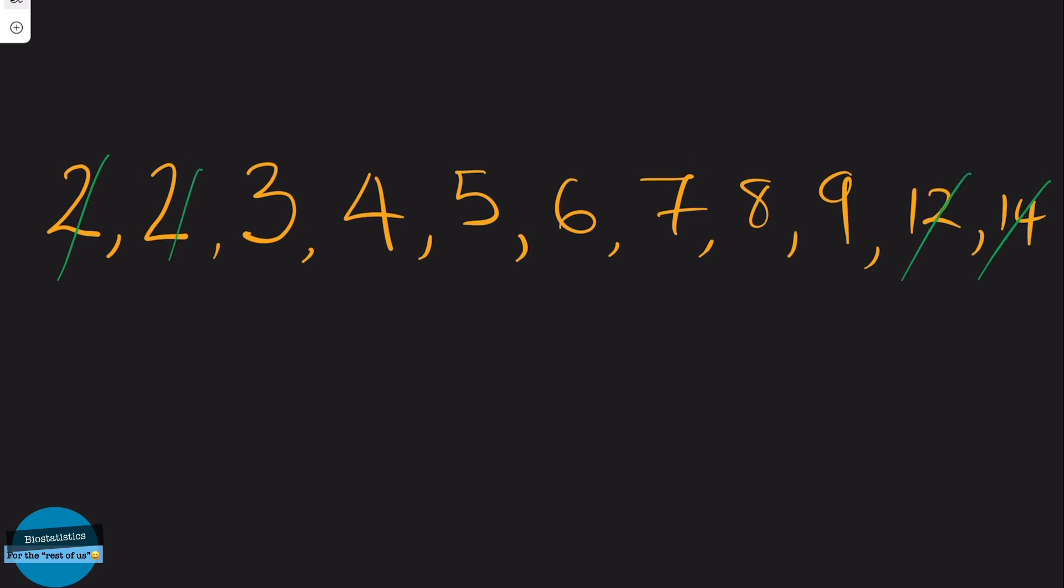Let's start cancelling out from both sides. So here and here, then this and this. So the middle data point is 6. So our second quartile, Q2, is 6. And this is the same thing as the median of the entire dataset.